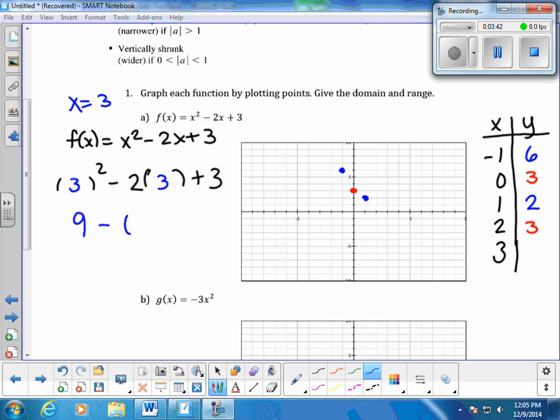I'm always substituting back into the original function, whatever value I choose for x and solve for y. So 3 squared is 9, minus 6, plus 3. That would be 3 plus 3, which is going to give us a 6.